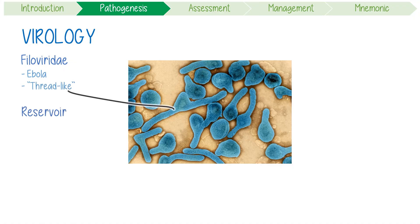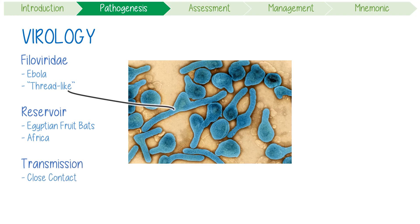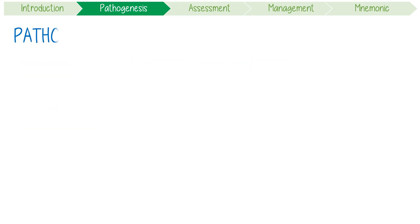It has a natural reservoir in Egyptian fruit bats found in several African countries like Uganda and Guinea. Transmission occurs through close contact with body fluids of infected patients, like sweat.